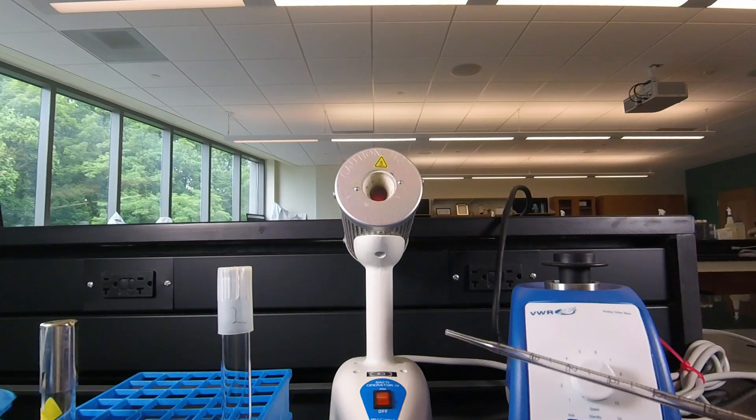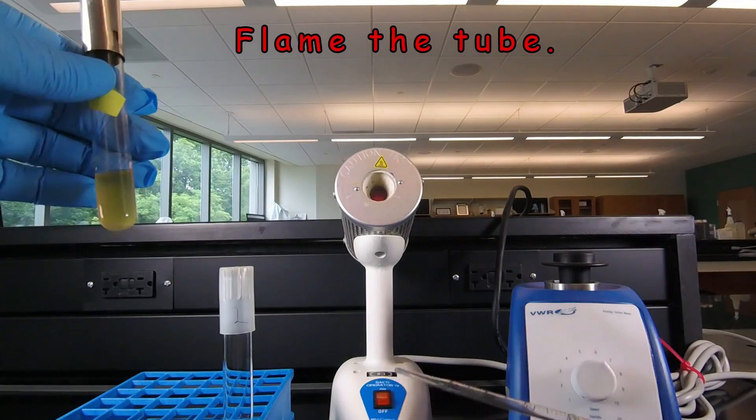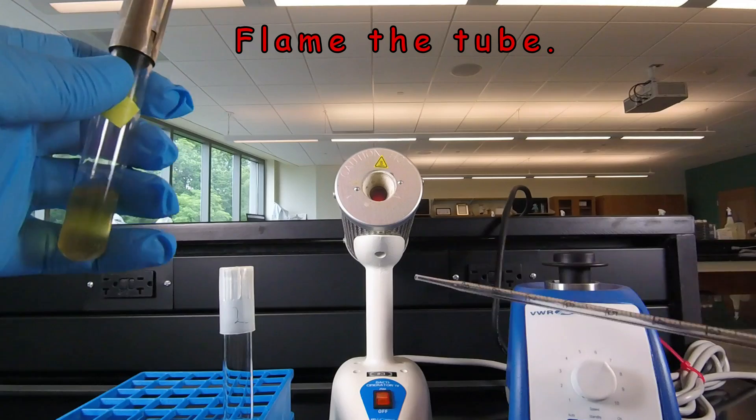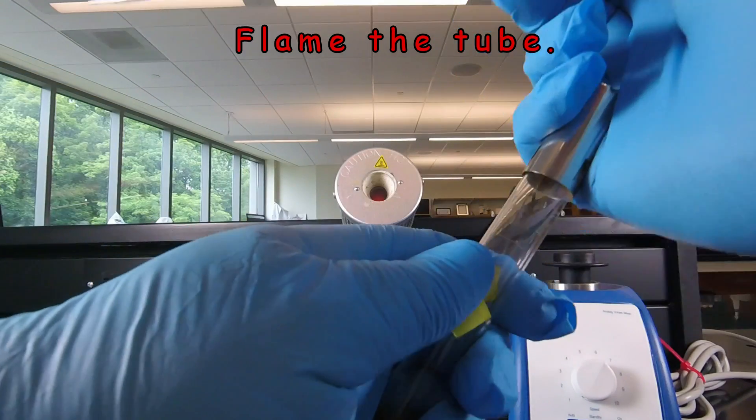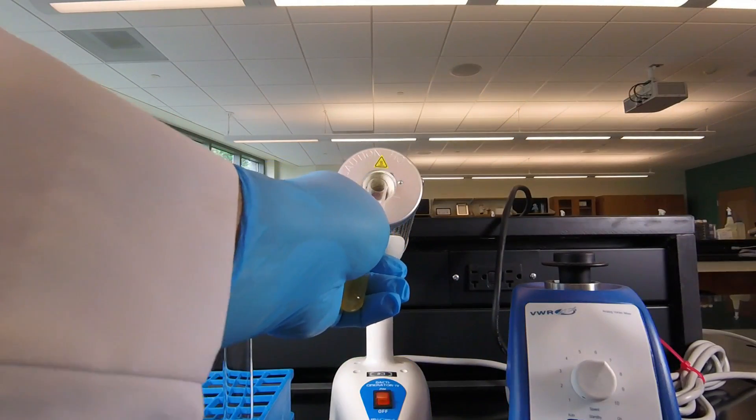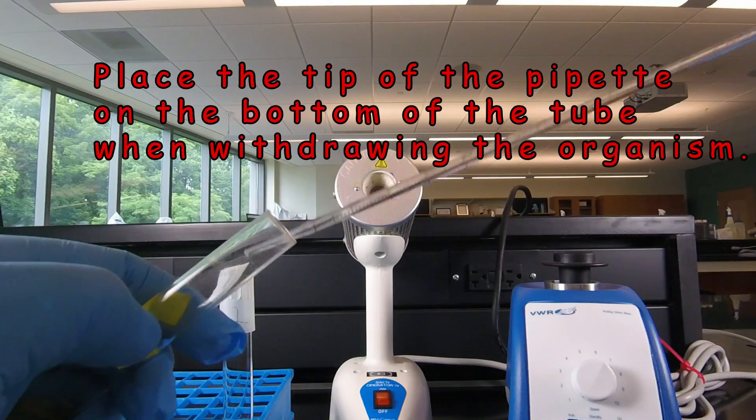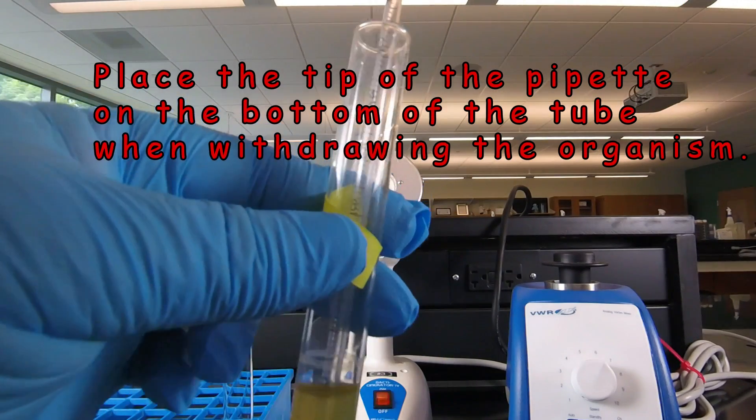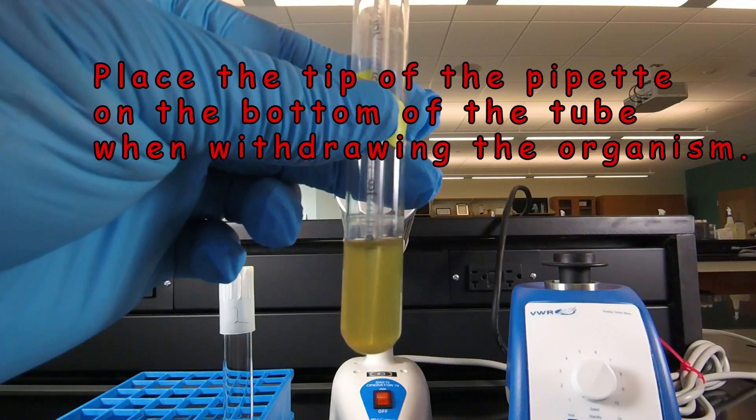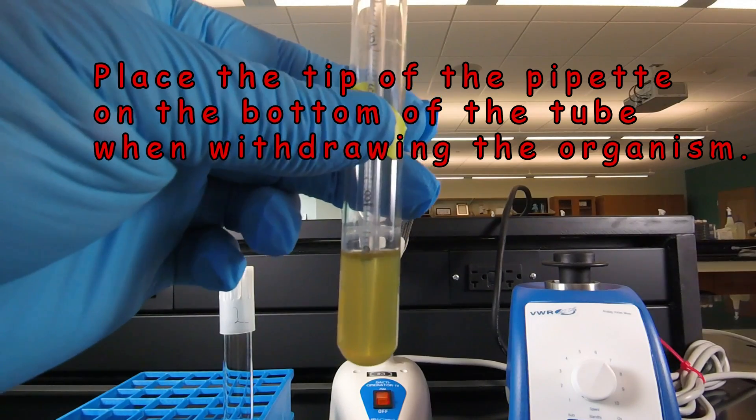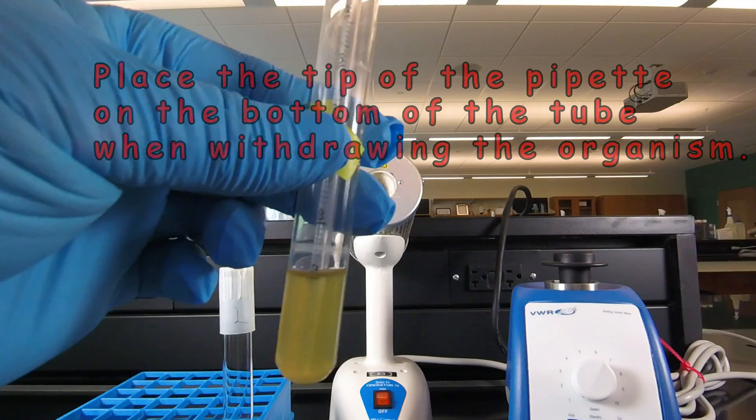So what we're going to do to start out then is remove some bacteria. And so again in aseptic technique we would flame the tube. Then we're going to put the pipet all the way into the bottom. Now again when we're pipetting we want to make sure we don't suck up air, just the liquid. So we want to make sure the pipet goes all the way to the bottom.